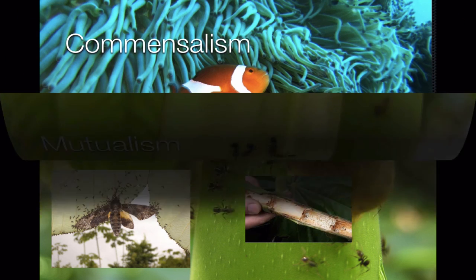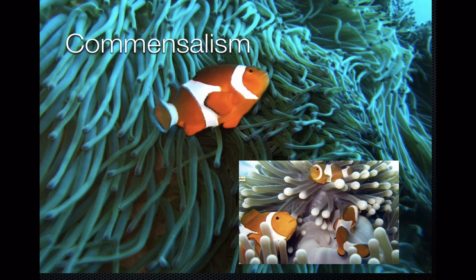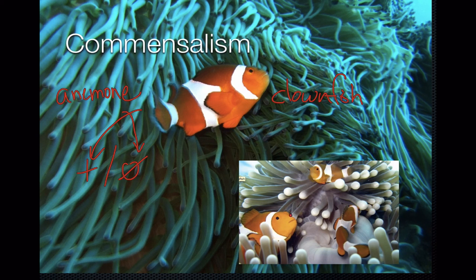Commensalism is when two species live together and one member of the partnership benefits while the other one really isn't helped or harmed — one is being helped and the other, really nothing. For example, this clownfish lives among the stinging tentacles of a sea anemone. The anemone isn't helped or harmed by the presence of the clownfish, but the clownfish is definitely helped. The clownfish lives among the tentacles, is not stung, and is protected from predators because no larger fish is going to stick its head in among all those tentacles and get stung.